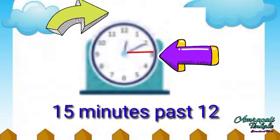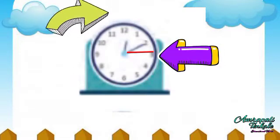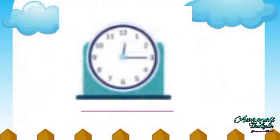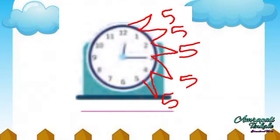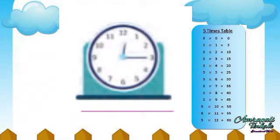Then we will see that our hand has also moved forward a little. Between two adjacent numbers, there is a difference of 5 minutes. That means we can use the multiplication table for counting minutes.